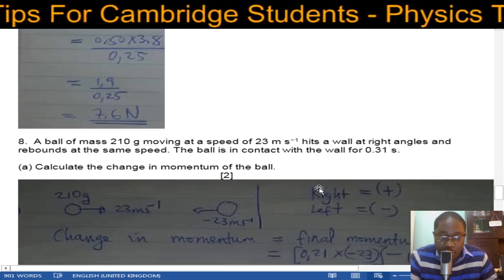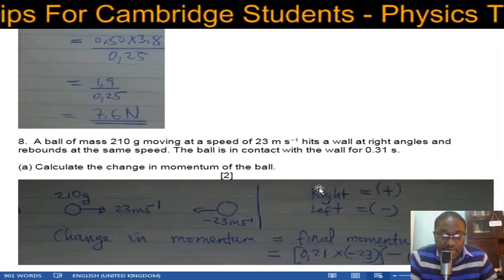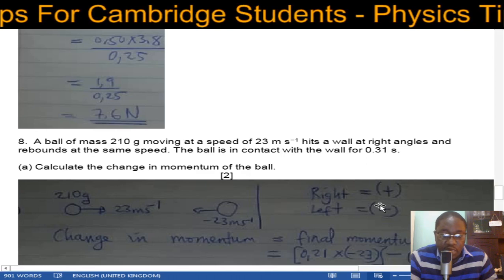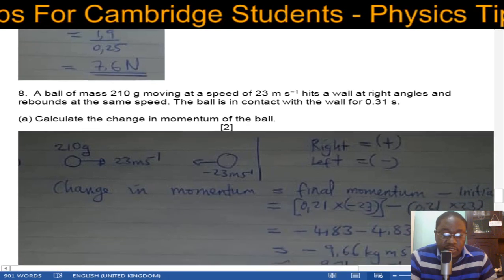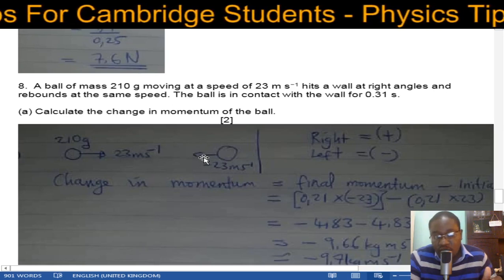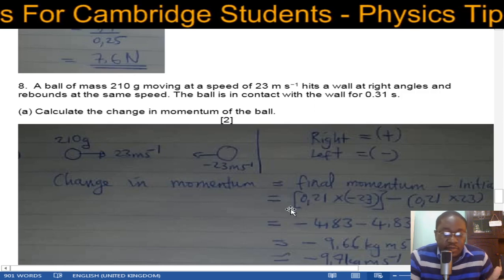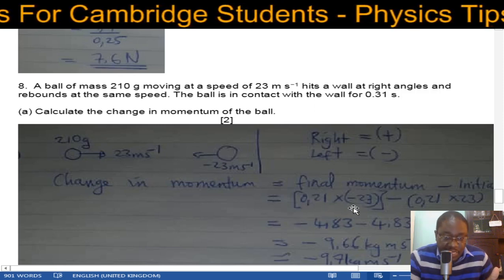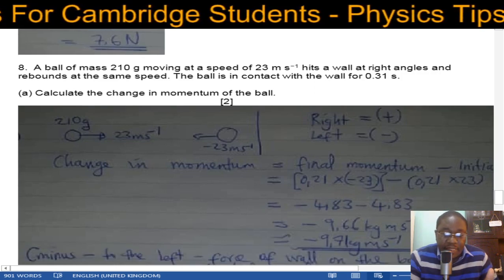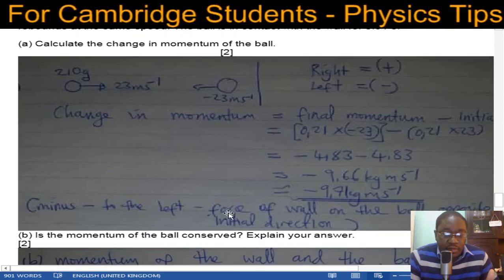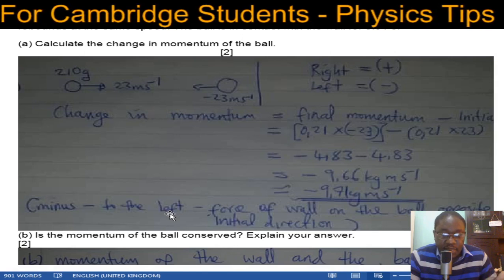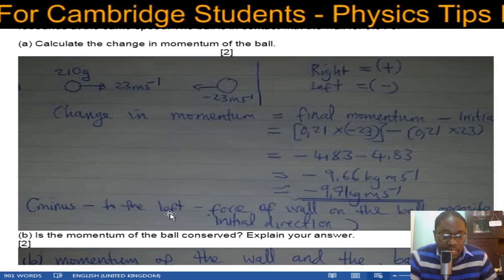Number eight: a ball of mass 210 grams moves at 23 m/s, hits a wall at right angles, and rebounds at the same speed. Contact time is 0.31 seconds. Final momentum is −4.83 kg·m/s, initial momentum is +4.83 kg·m/s. Change in momentum = −4.83 − 4.83 = −9.66 kg·m/s. The minus indicates it moves to the left. The force on the wall is equal and opposite by Newton's third law.